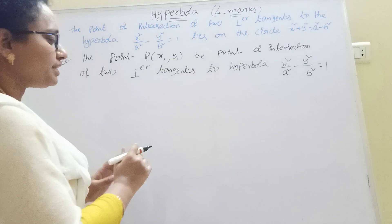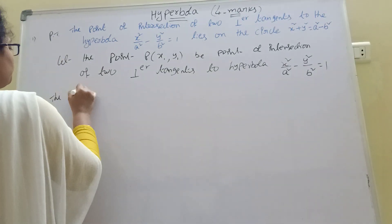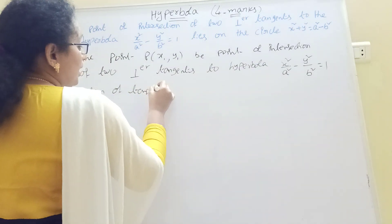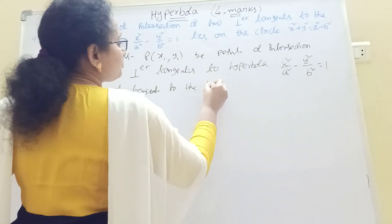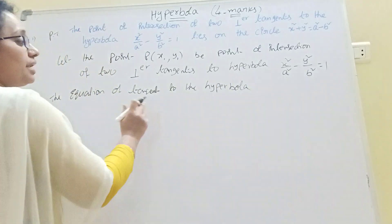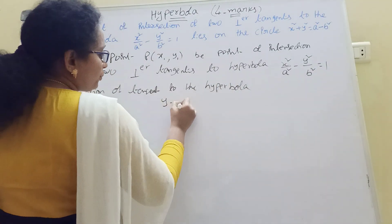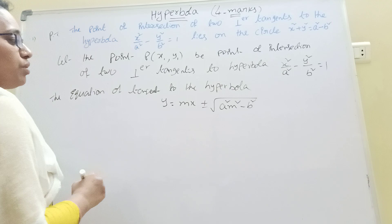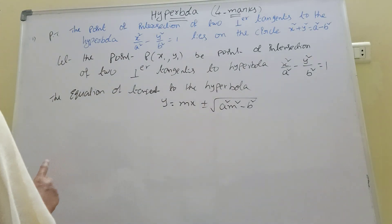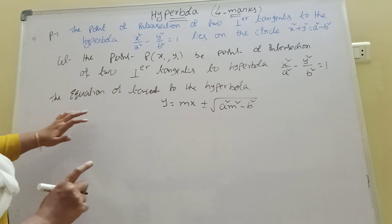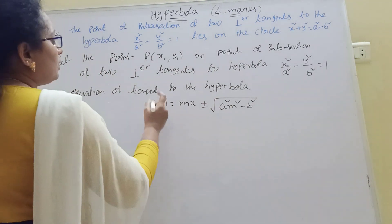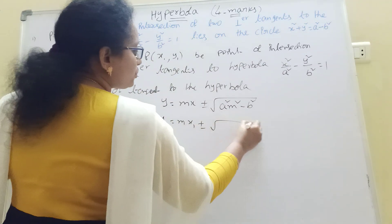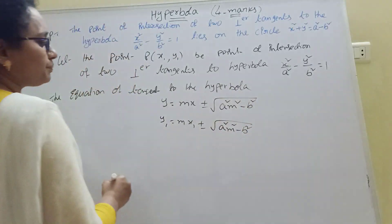Now what is the formula? The equation of the tangent to the hyperbola. The equation of tangent to the hyperbola is: y equal to mx plus or minus root of a²m² minus b². This is the tangent formula. The point (x₁, y₁) now — the point lies on the tangent.